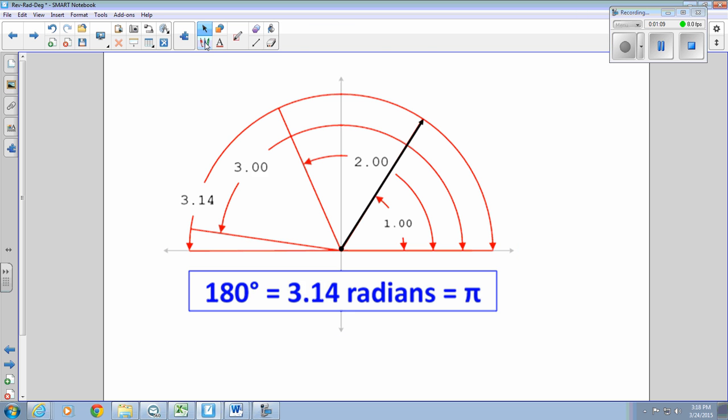that length is the same as this length along the arc. That's one radius long, one radian, one radius long, two radiuses long, three radiuses long.